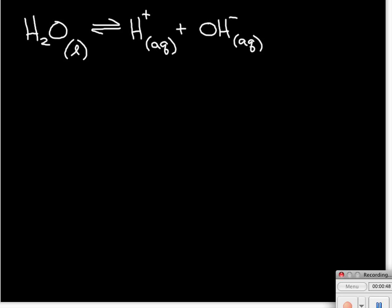It's an equilibrium process, meaning that some of the water molecules at any given time are dissociating into hydrogen ions and hydroxide ions. And at the same time, there's a certain number of hydrogen ions and hydroxide ions that are finding each other and reforming water molecules, and it's all at equilibrium.